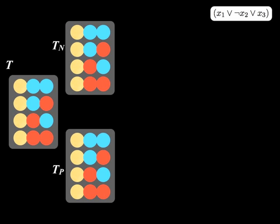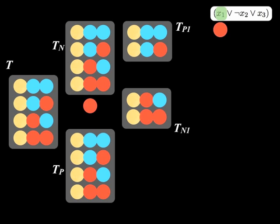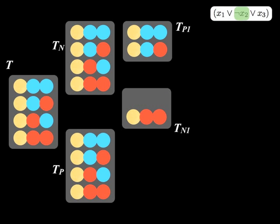Ogahera and Ray's algorithm builds witnesses from the initial set of four witness candidates. The tubes get appended with a literal assignment based on if the clause has already been satisfied.